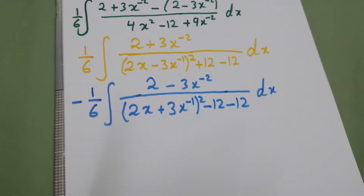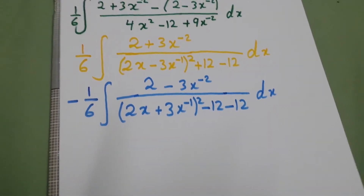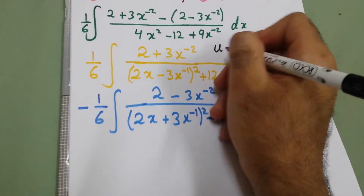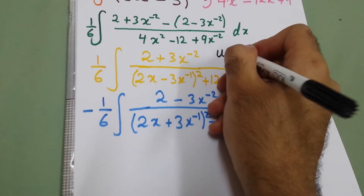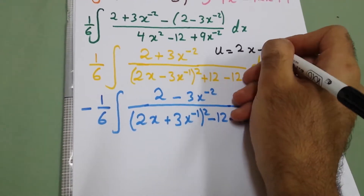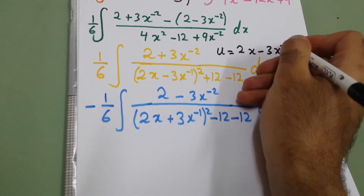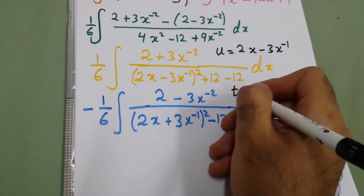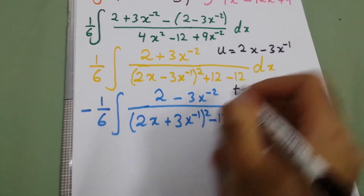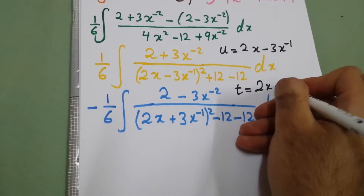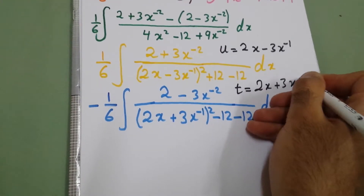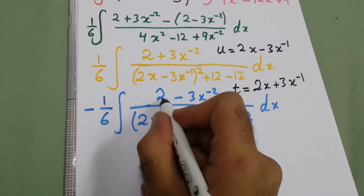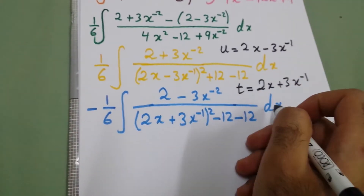Now we will do substitution. For the first integral, we put u equal to (2x − 3x⁻¹), so du will be the derivative of that. For the second integral, we put t equal to (2x + 3x⁻¹), so dt will be (2 − 3x⁻²) dx.